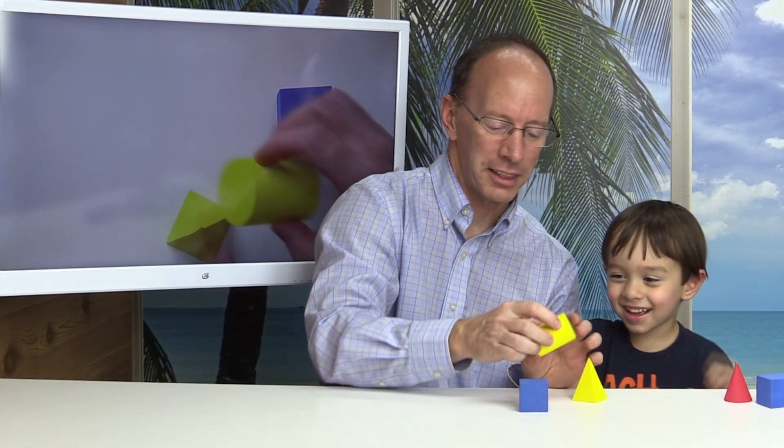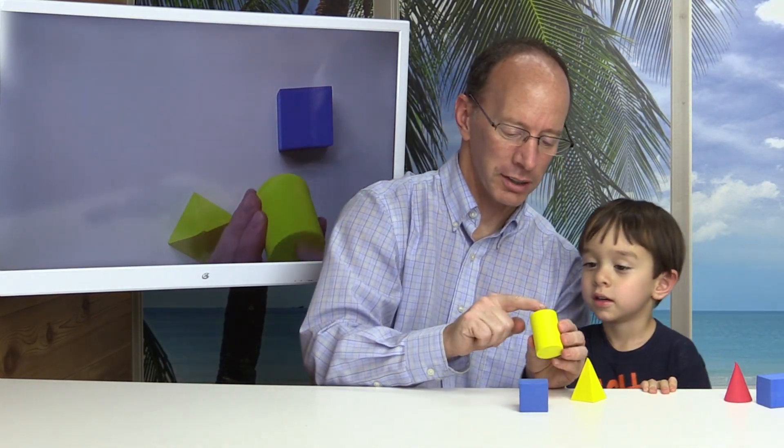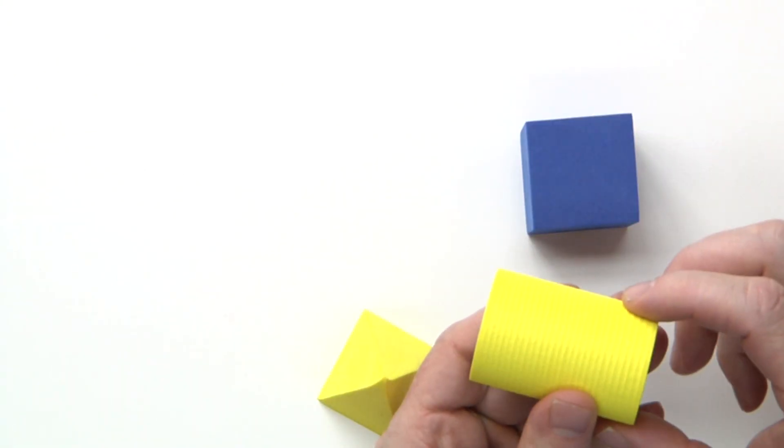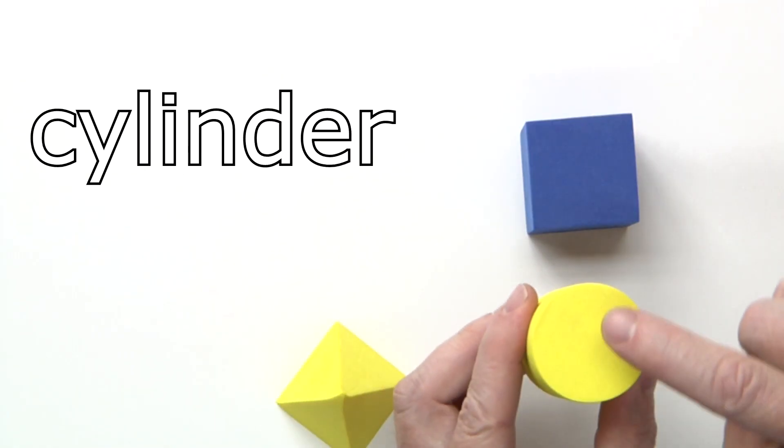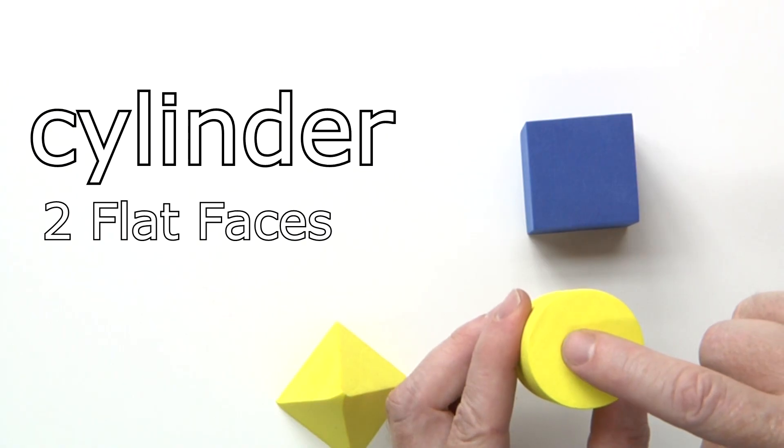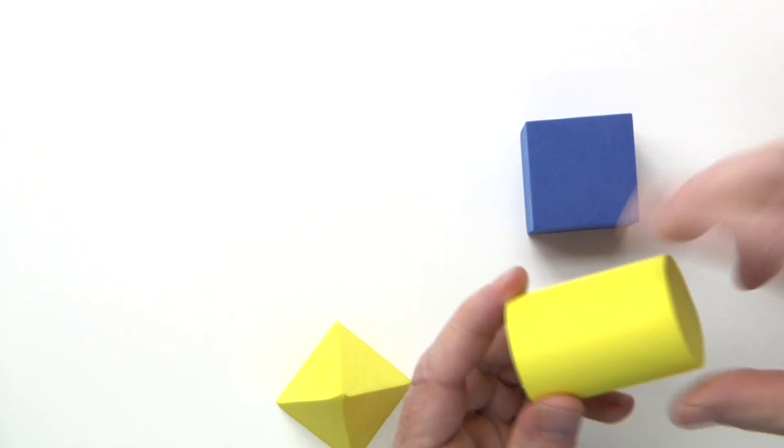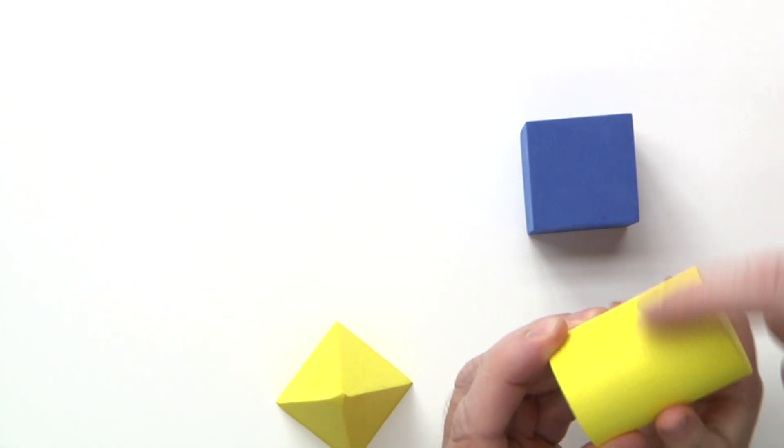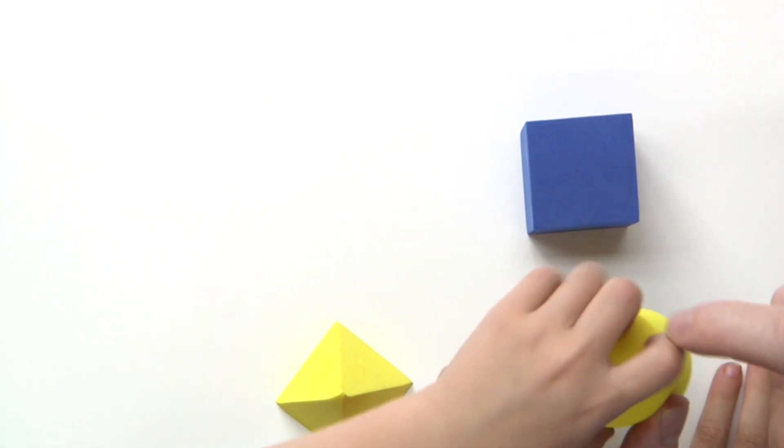Let's take a look at this. This is like a circle. Yeah, it's like a circle. Yeah, these are circles. This is called a cylinder. And a cylinder has two flat faces. One, two. And some schools will say that this is a curved face, but for right now we're just going to say a cylinder has two faces.